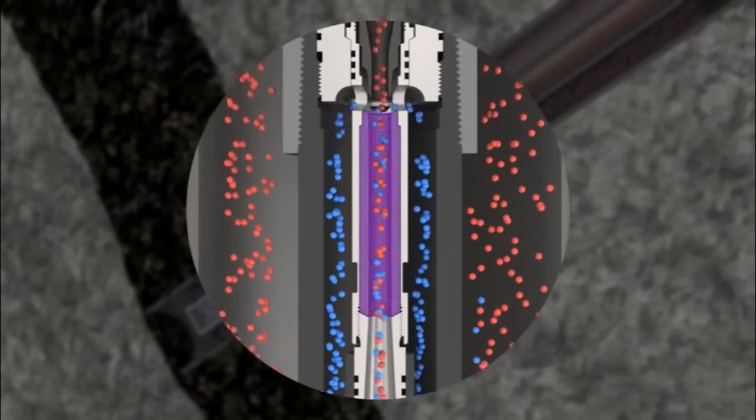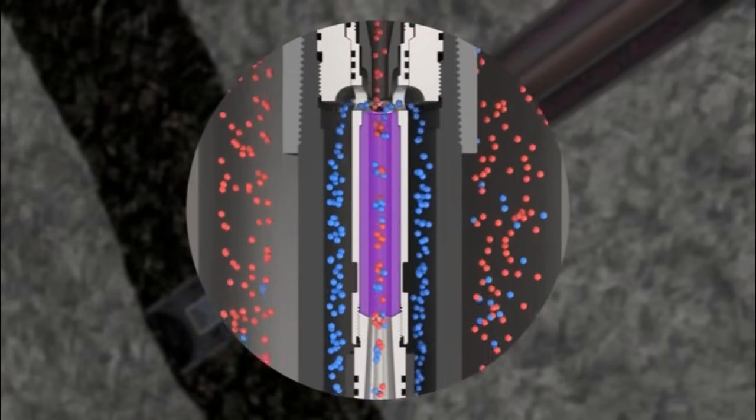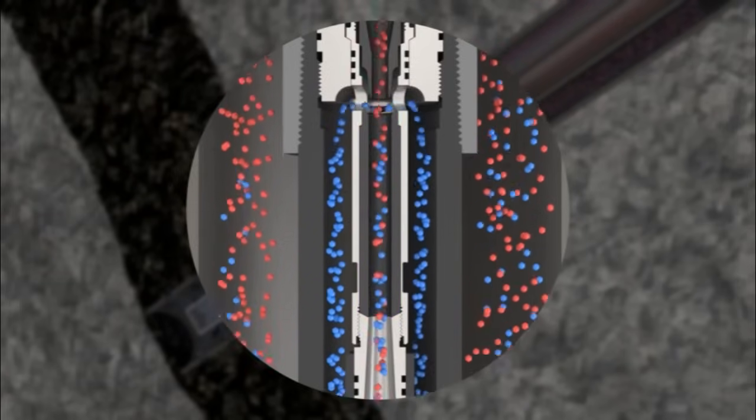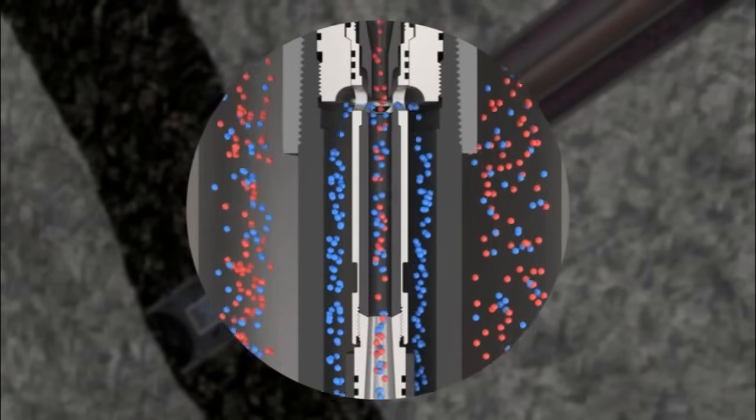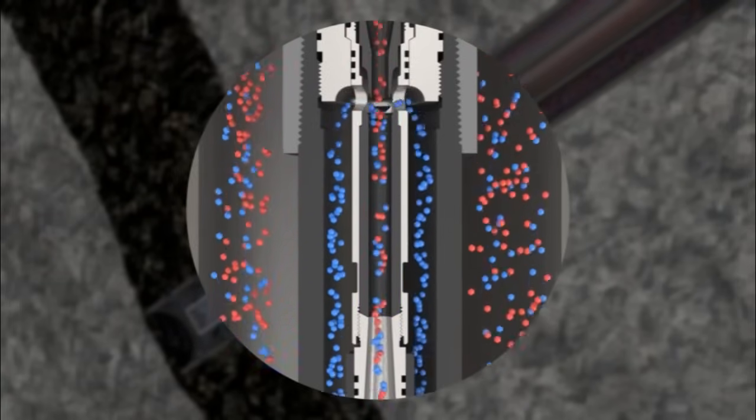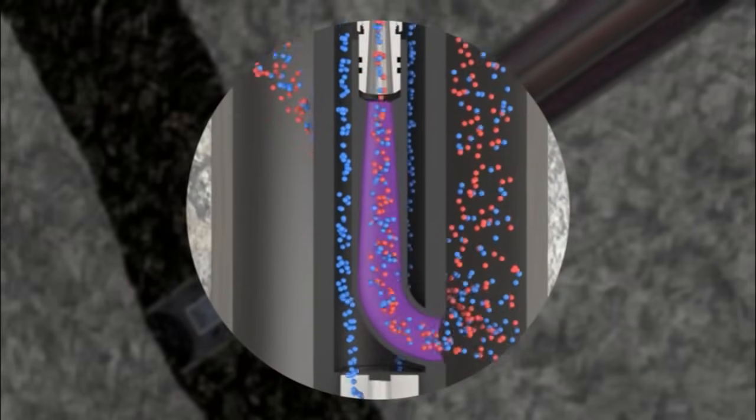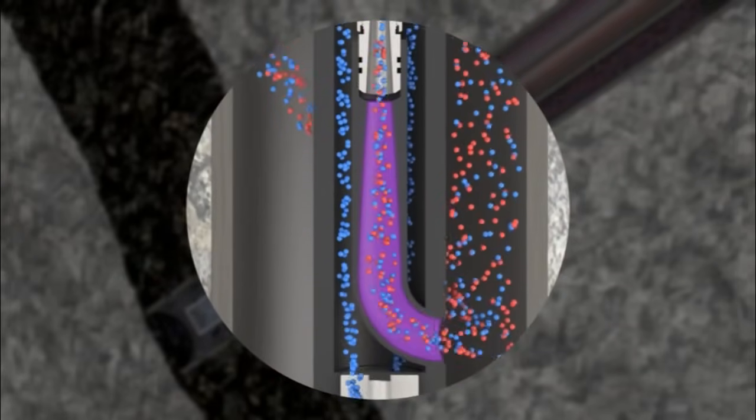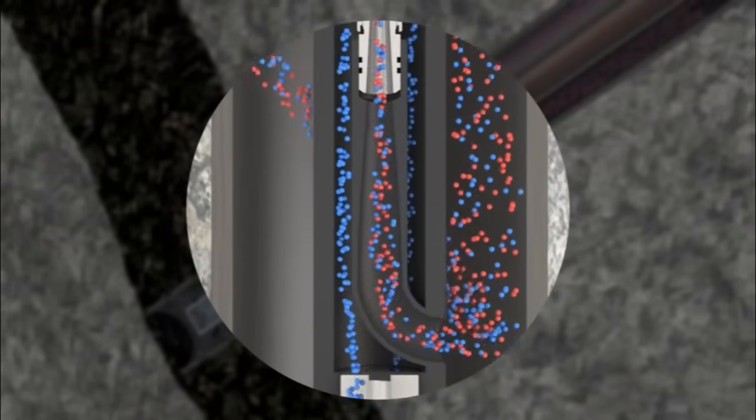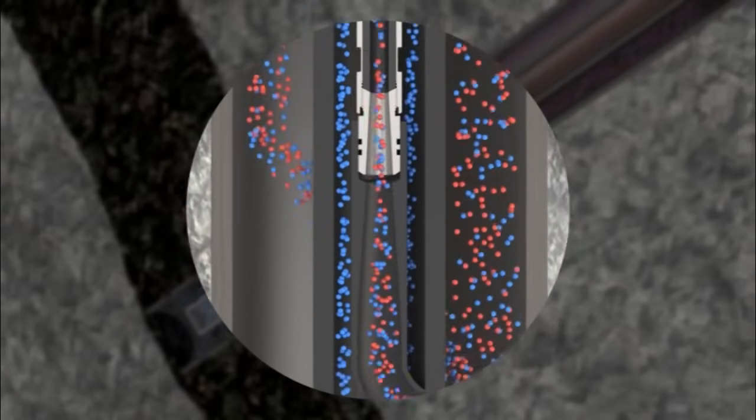In a mixing tube or throat, the power fluid encounters the produced fluid where it combines and accelerates to an average velocity. In the pump's diffuser, the velocity of the mixed stream is converted back to pressure and the combined fluids lift to the surface.